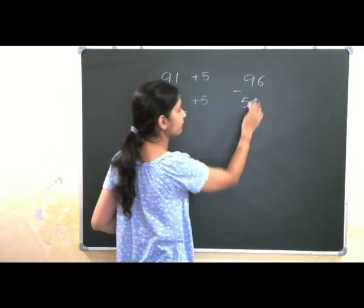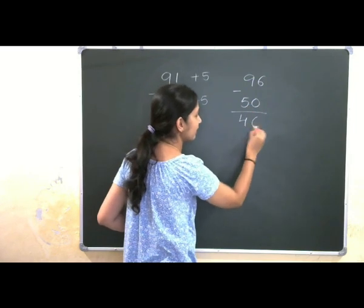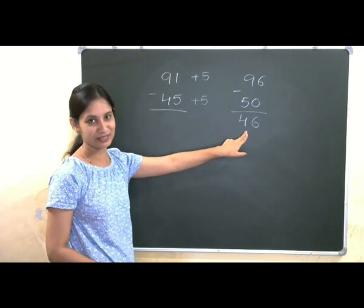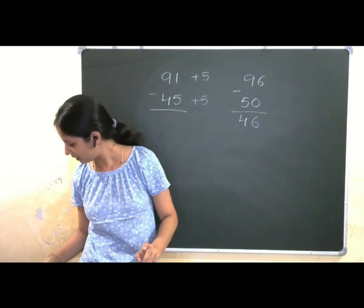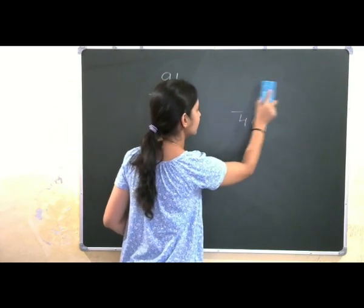So, 91 plus 5 gives you 96. We are subtracting 50 from 96. That is 46. It is very easy to subtract now. So, answer is 46. Now, we will go for one more method. I will just keep the answer here.